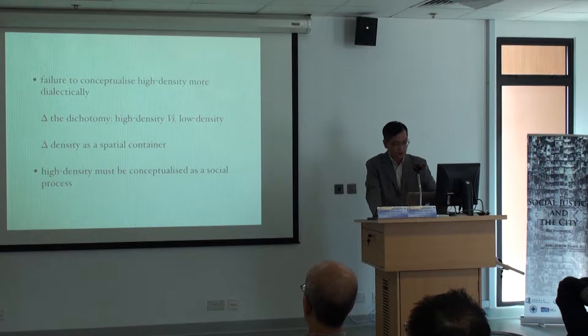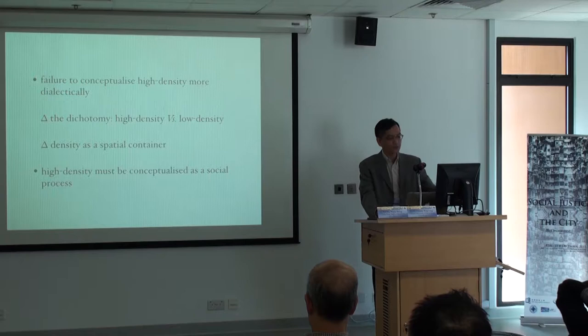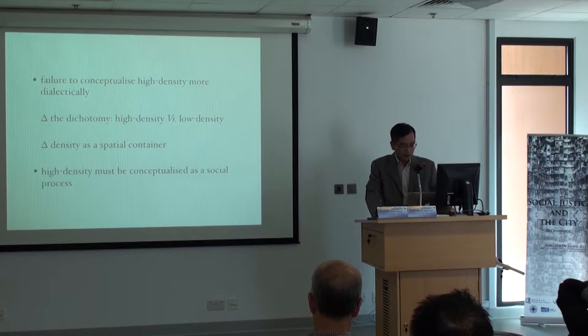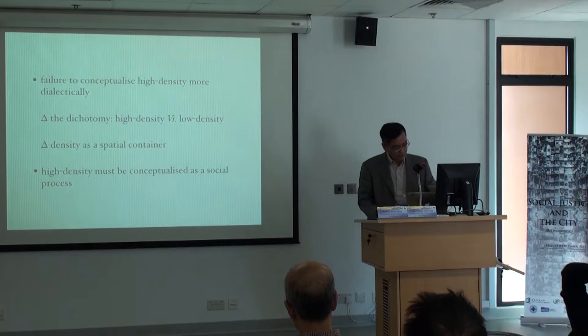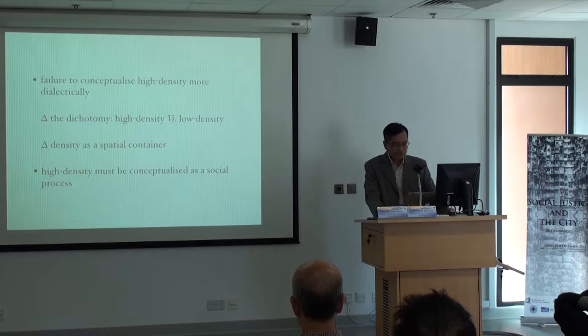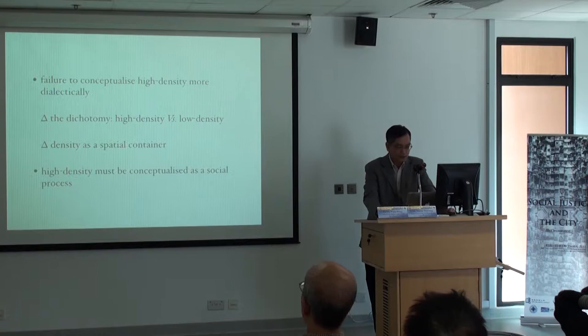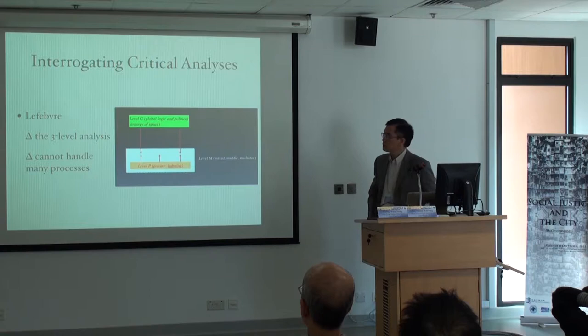What we are arguing is that it's important for us to theorise high density as a social process. That's about what we can call mainstream theory. So what we do is look at the more critical analysis. We look at Lefebvre. Lefebvre tries to look at it as a process — not as a thing — and tries to see things at three levels: level G, level M, and level P with the individual. What I would like to argue is that even Lefebvre cannot handle a lot of processes.